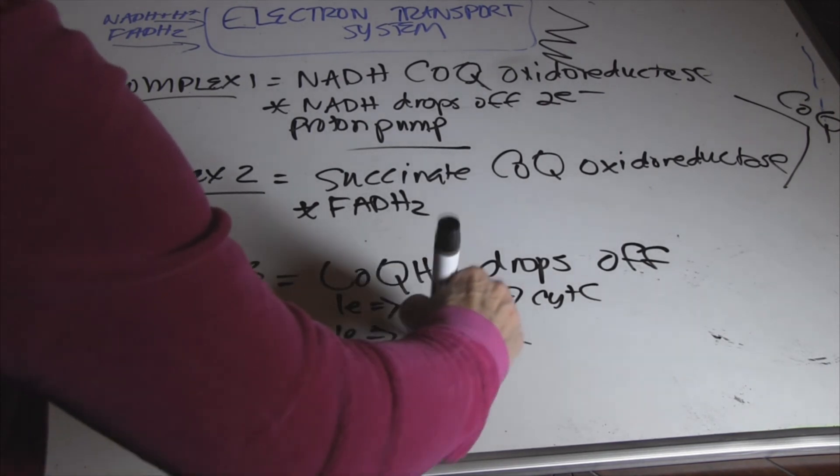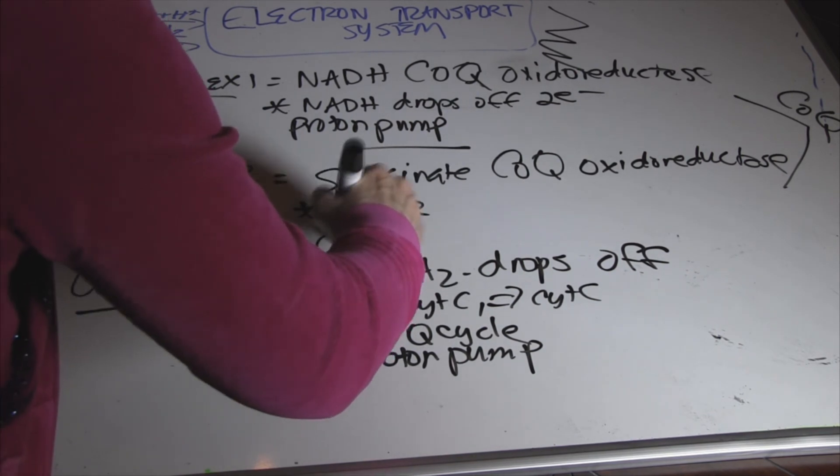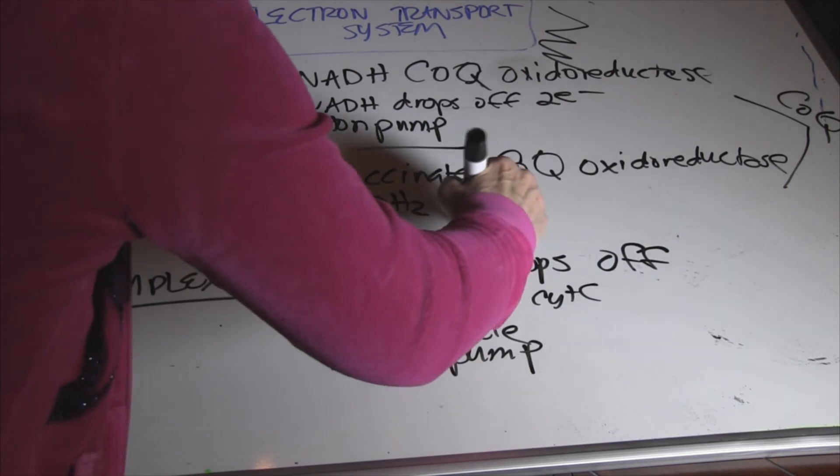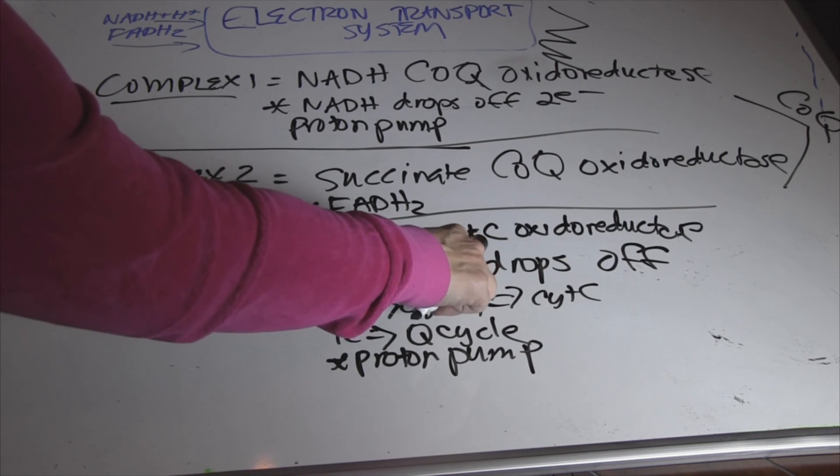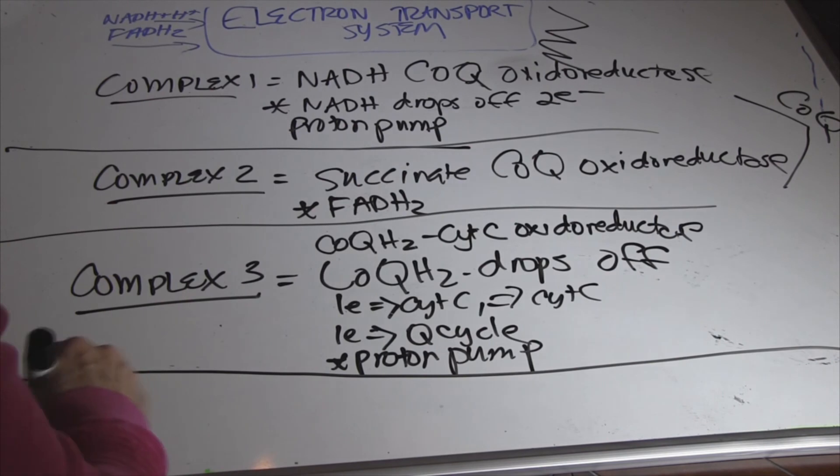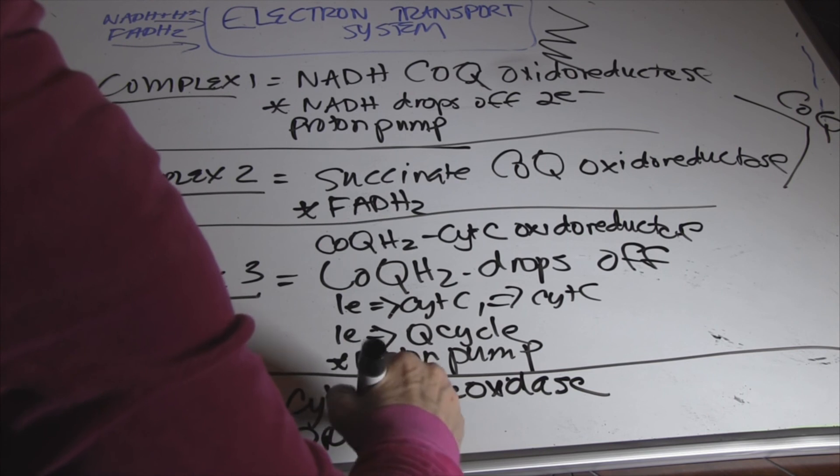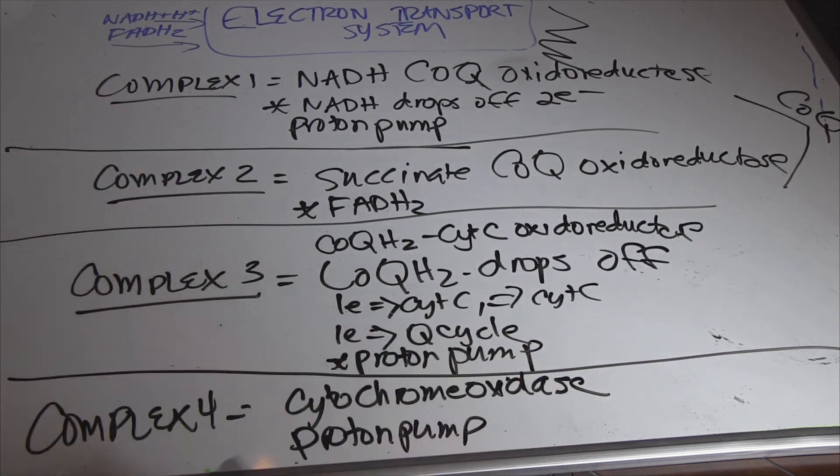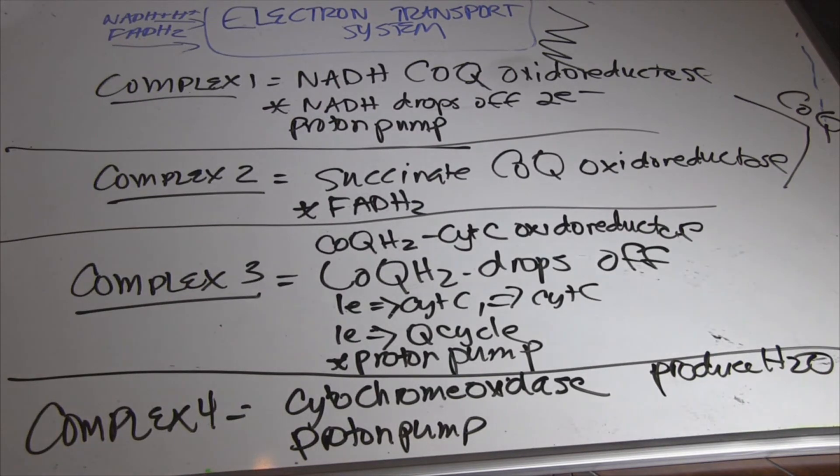This one is a proton pump. And let's see. This one, I don't think I've mentioned this before. CoQH2. Coenzyme QH2, cytochrome C oxidoreductase is the name of complex 3. Complex 4, we are a proton pump. We're called cytochrome oxidase, which is the last complex when we produce water.